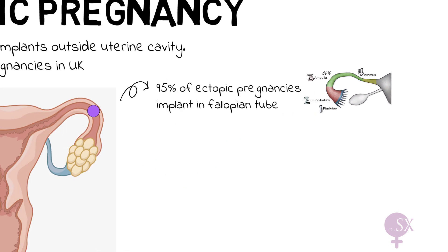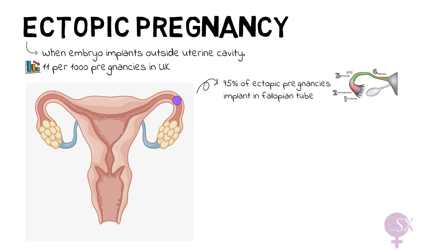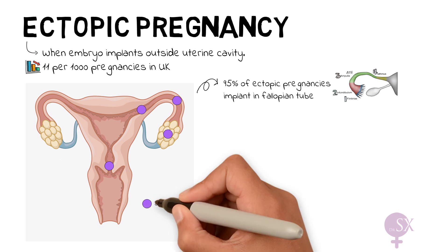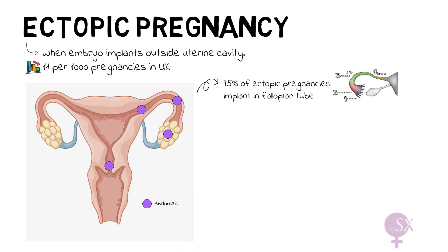Going back to our original diagram, an ectopic pregnancy might also implant in the cornea of the uterus, in the ovary, or in the cervix. They can also implant in the abdomen on an organ within the peritoneal cavity, such as the broad ligament. Sometimes they might also implant on a previous cesarean section scar.